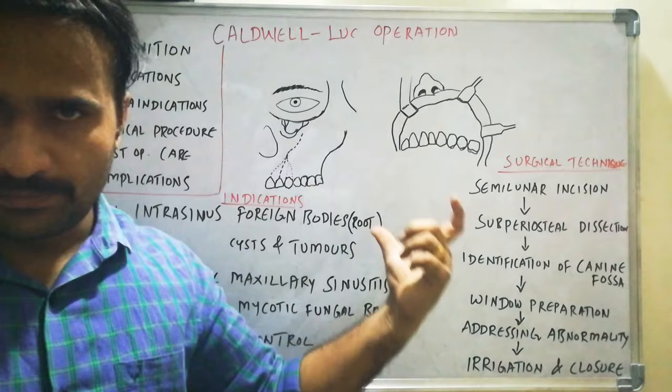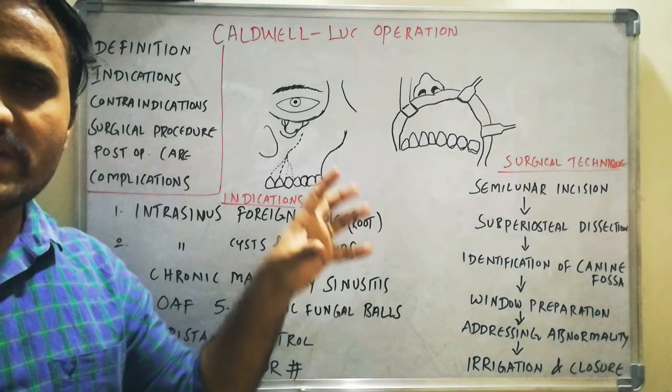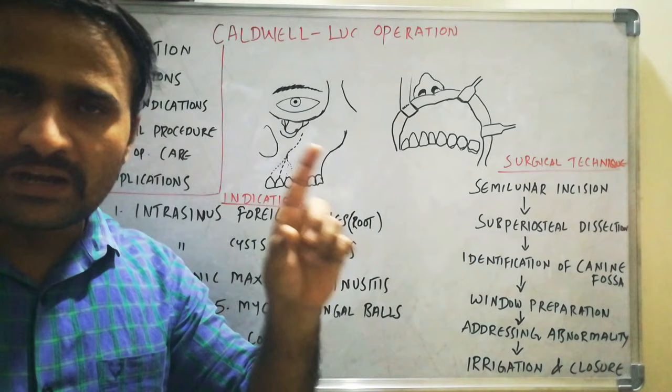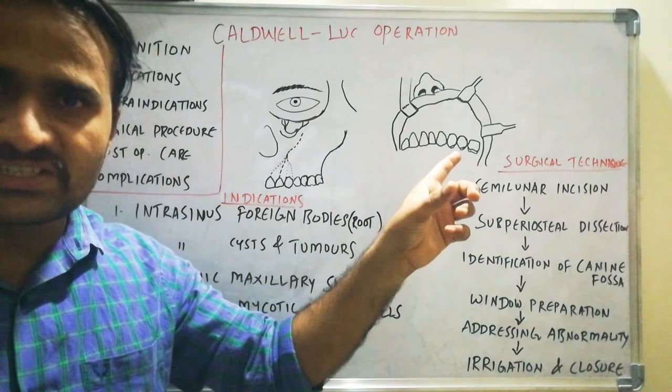Coming to Indications: this procedure is indicated in cases of intra-sinus foreign bodies — that is, any root fragments or tooth that has escaped into the Maxillary Sinus, especially when extracting the Maxillary Second Premolar and the Palatal Root of the Maxillary Molar. There are chances of the root fragment or remaining apical third escaping into the Maxillary Sinus, and in those cases you perform the Caldwell-Luc operation.